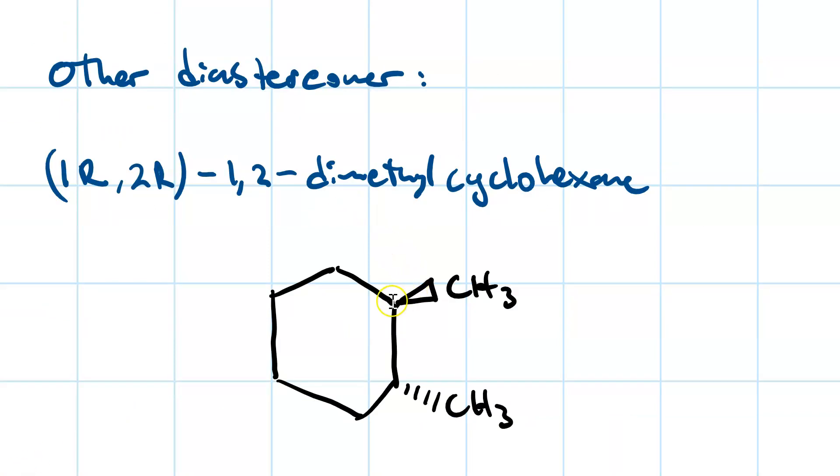Well, our original molecule was up on carbon one and up on carbon two. So, to change carbon two, we make it down. So, once again, drawing in the implied hydrogen.